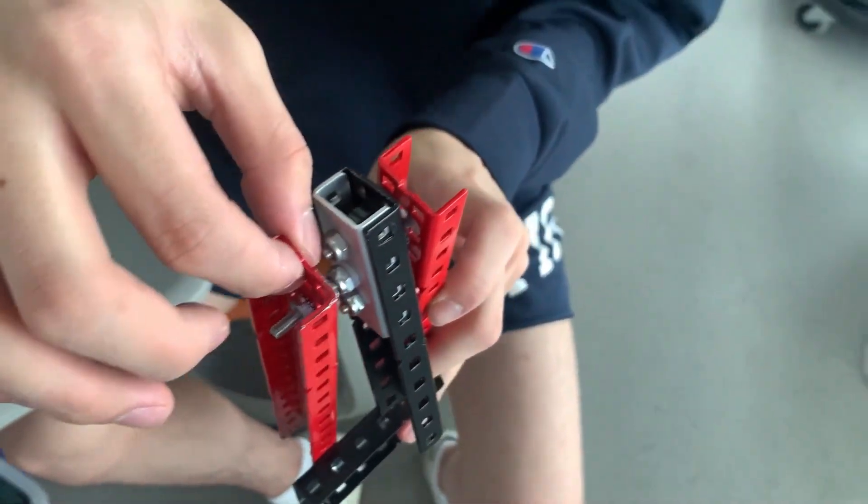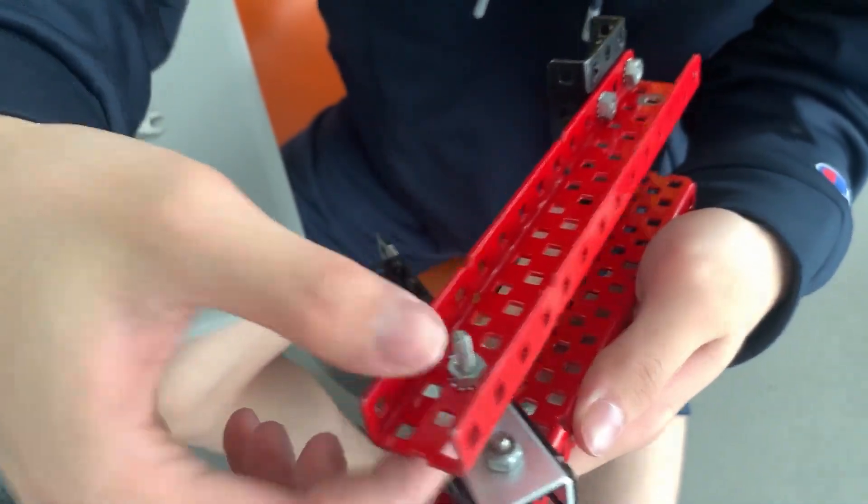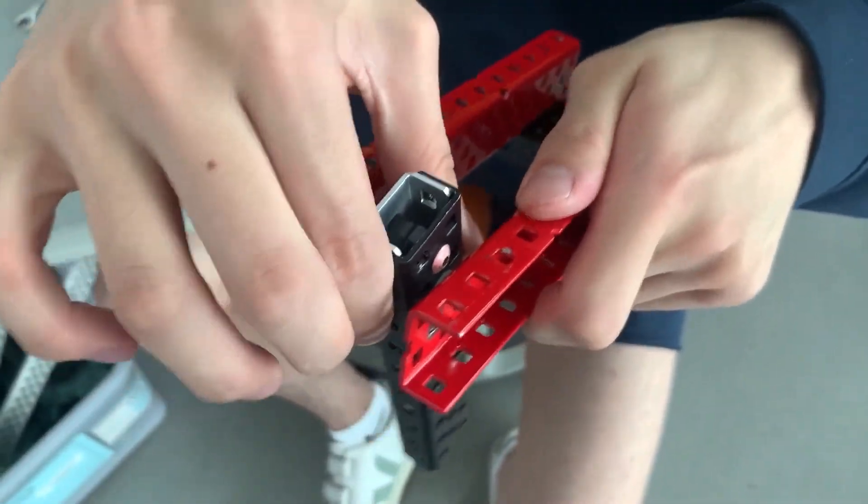Then now, as you can see over here, the two cap nuts are clamping against the C-channel. So now that there's support on this side, and there's also support on this side from the shoulder itself, the screw joint is now fully constrained.